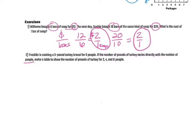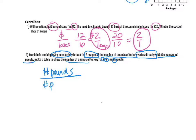Next one, number two. Franklin is cooking a three-pound turkey breast for six people. If the number of pounds of turkey varies directly with the number of people, then make a table to show the number of pounds of turkey for two, four, and eight. So what I mean by earlier when I said it varies directly, they're telling you how to set up your ratio. So it says the number of pounds varies directly with the number of people. So that's how they want you to set up that ratio. Pounds of turkey on top, people on the bottom. So the pounds is my y value, the people is x.